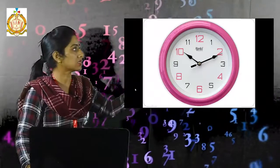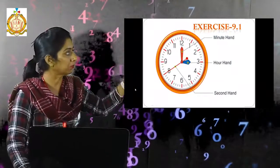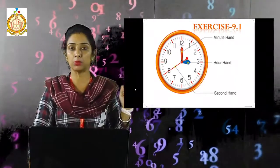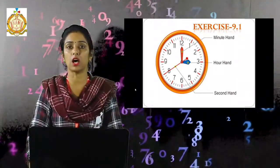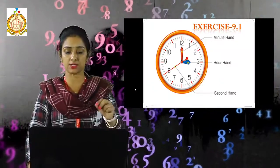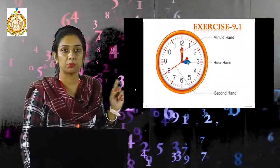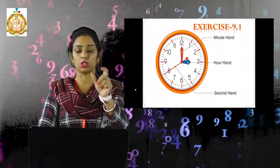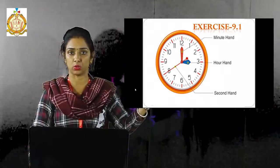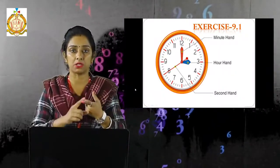See, this is a clock. In a clock there are three hands. The bigger one is called the minute hand, shown in blue color. The smaller one is called the hour hand. The very thin hand is called the second hand. So the bigger hand shows the minutes, the smaller one shows the hour, and the thin one shows the seconds.